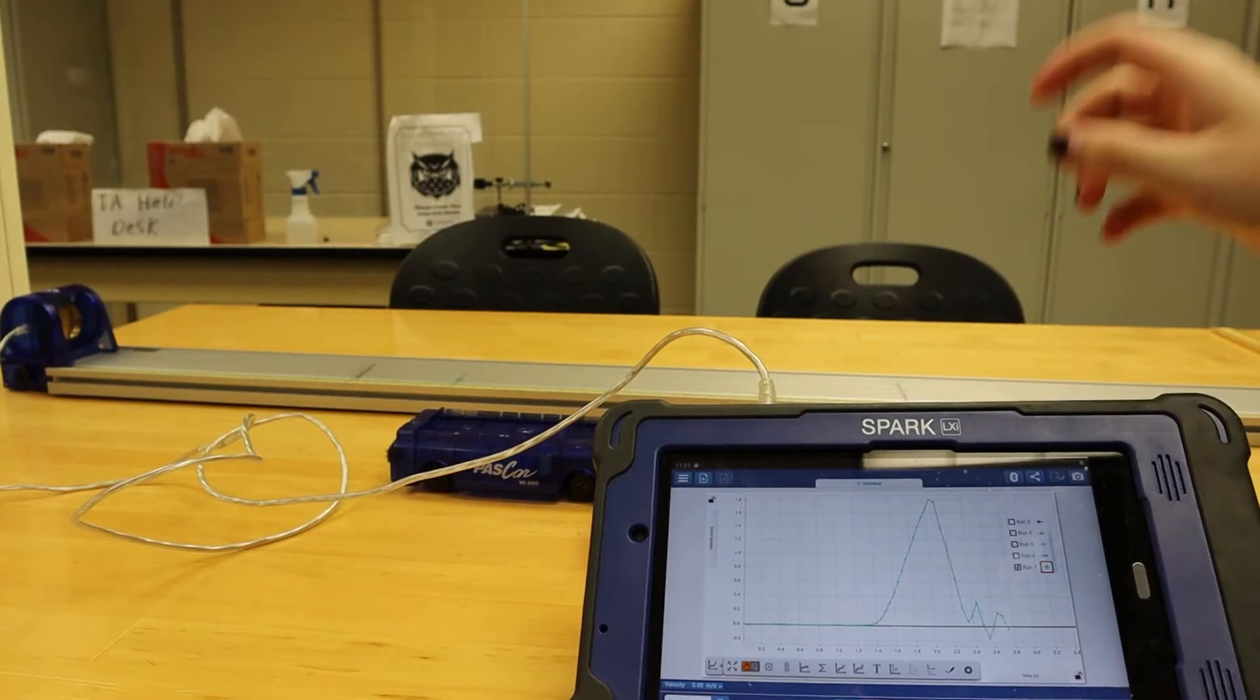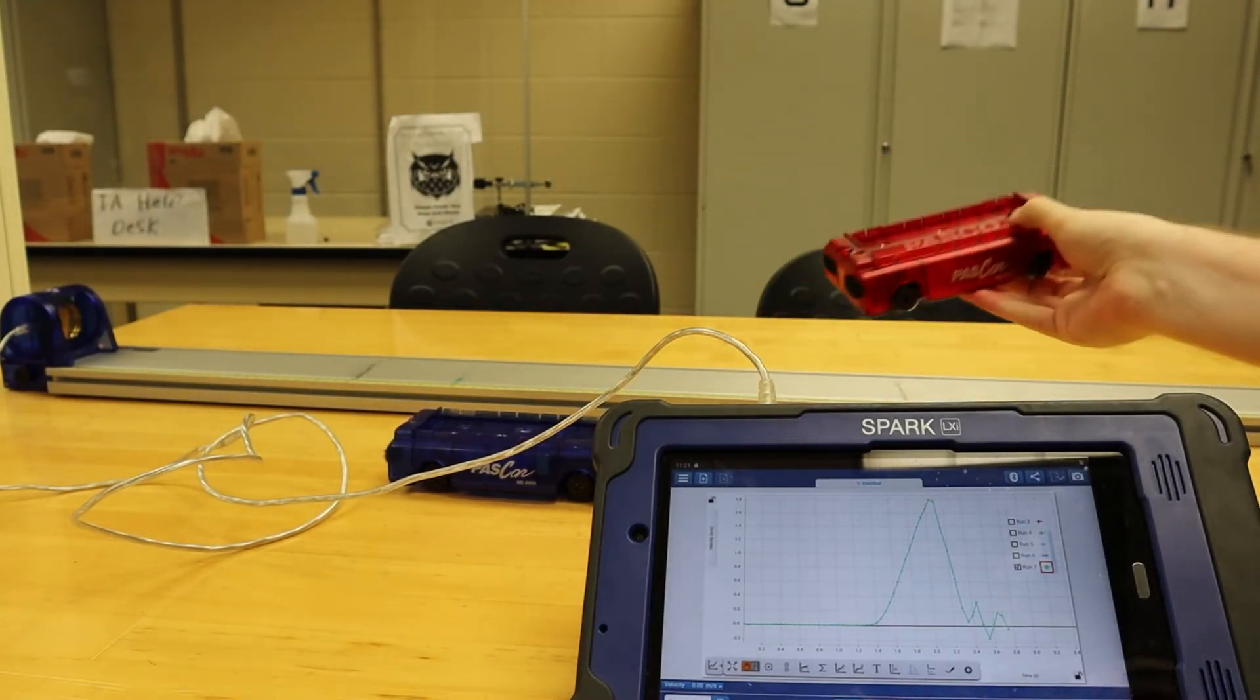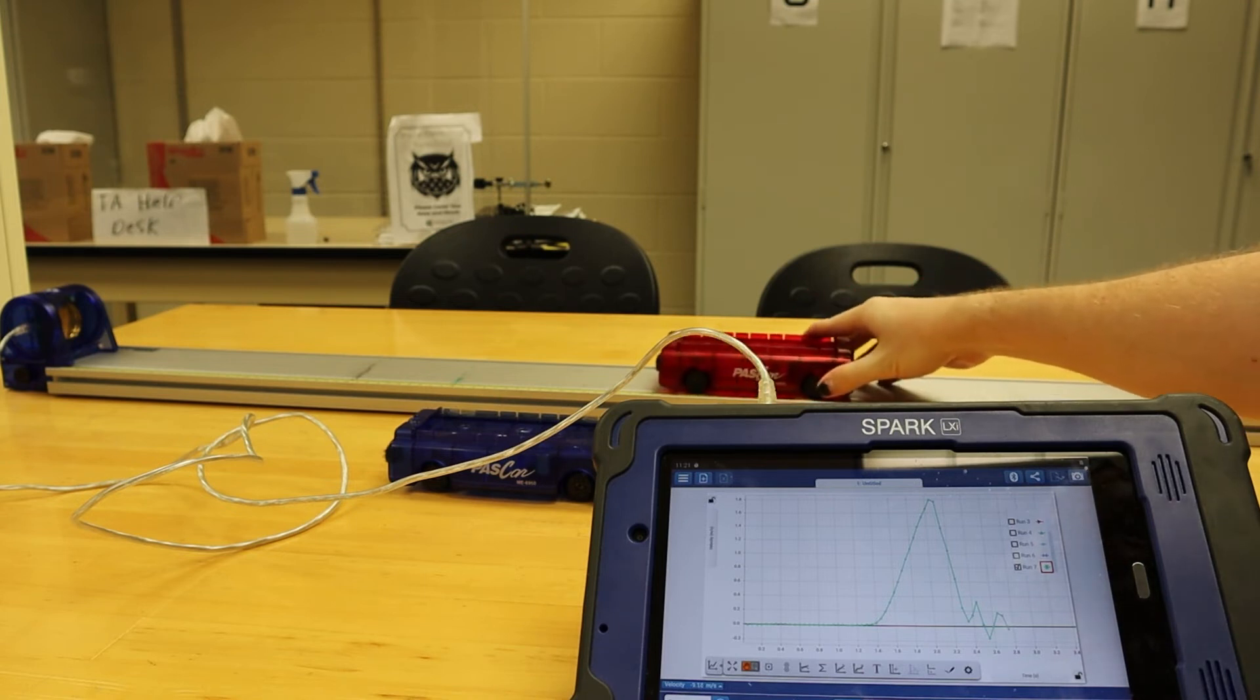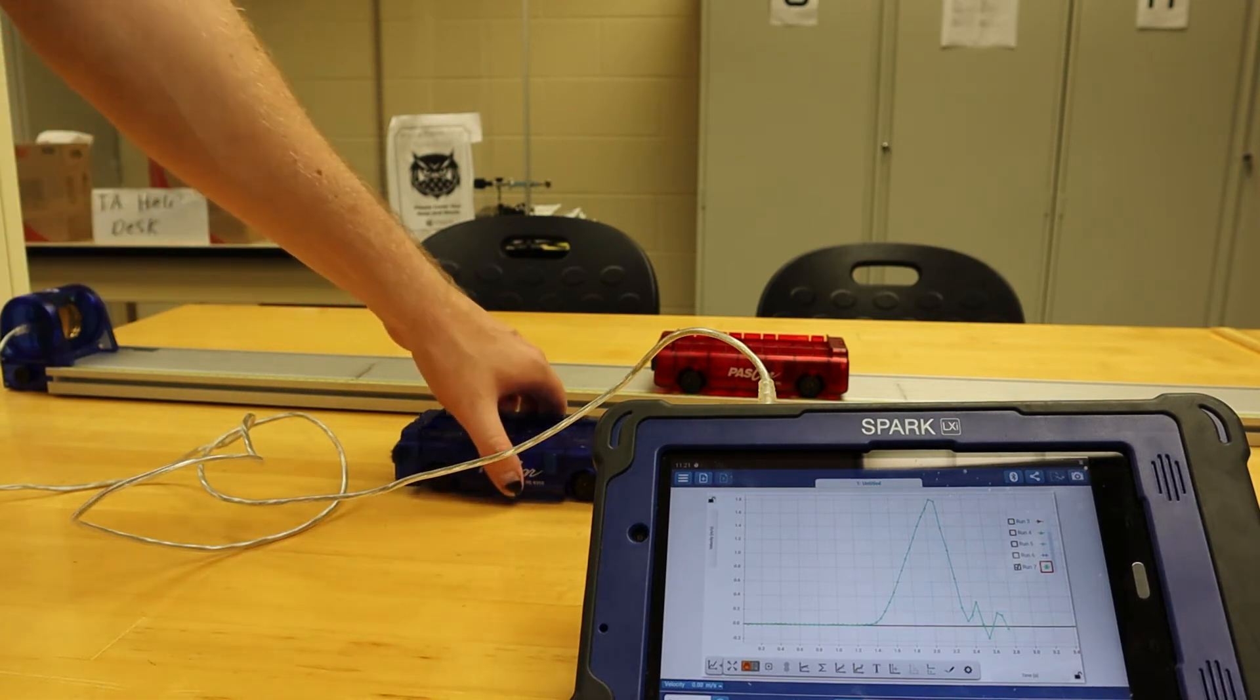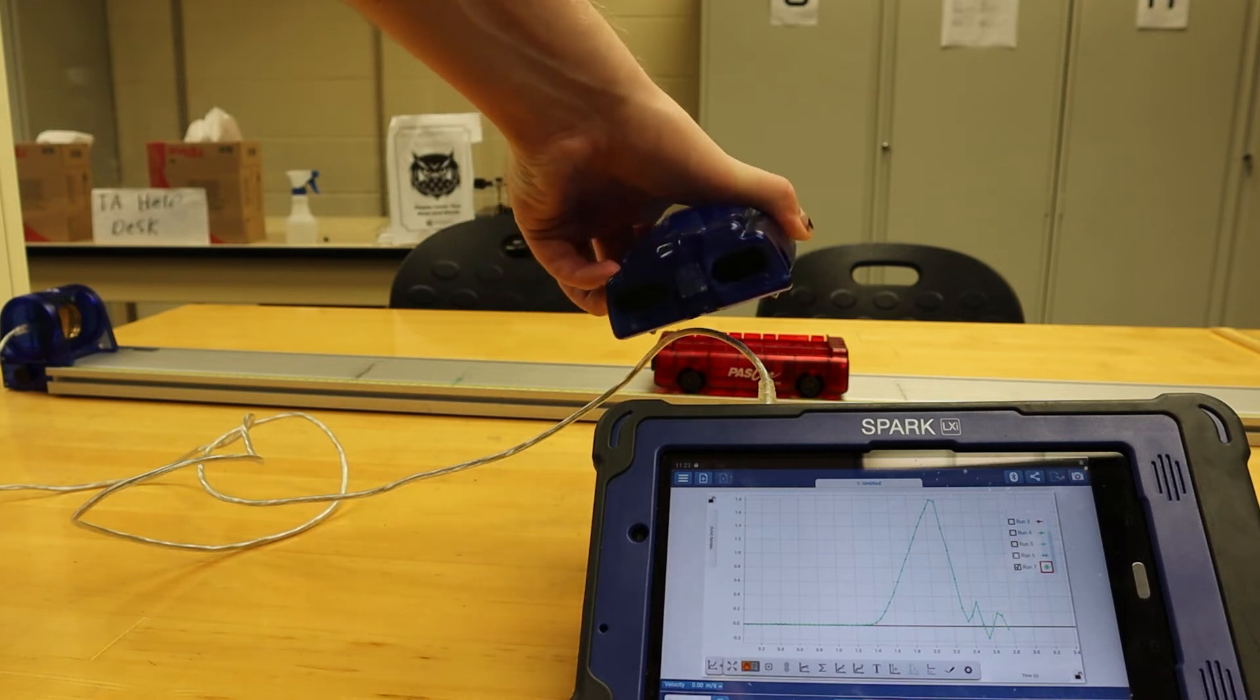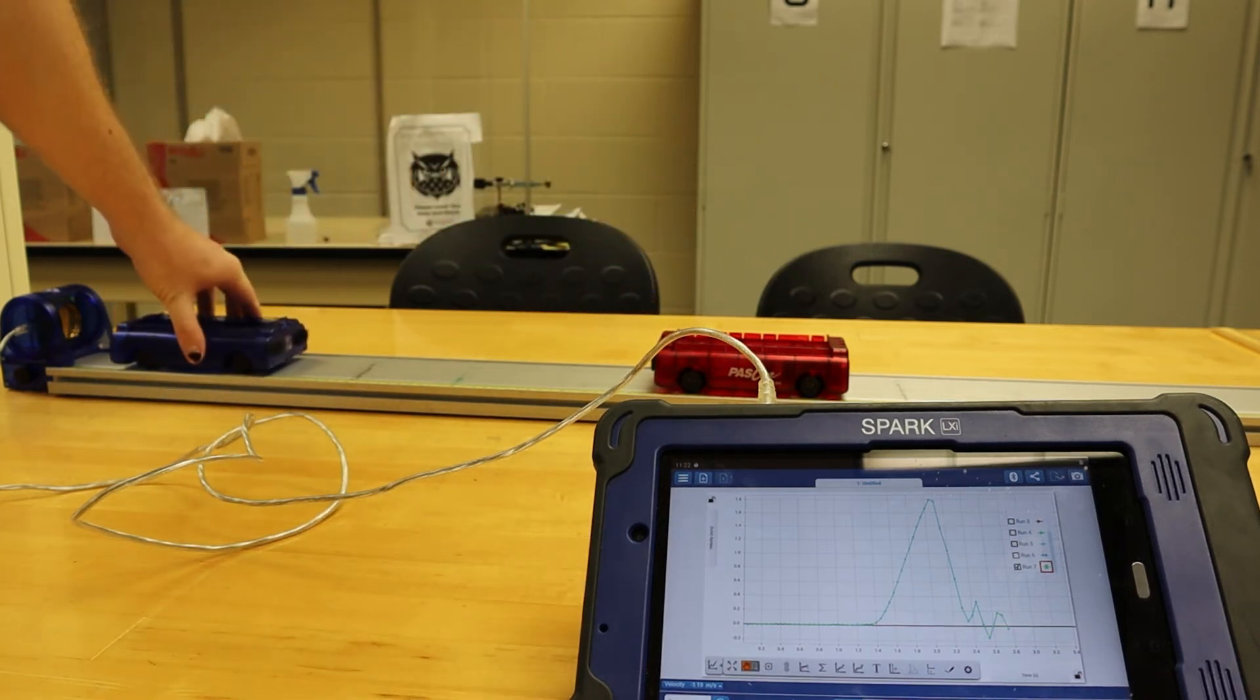Procedure B involves inelastic collisions. To begin, we will position the red passcar towards the middle of the track with the velcro side facing the motion sensor. We will then position the blue passcar towards the motion sensor with the velcro side facing the red passcar.